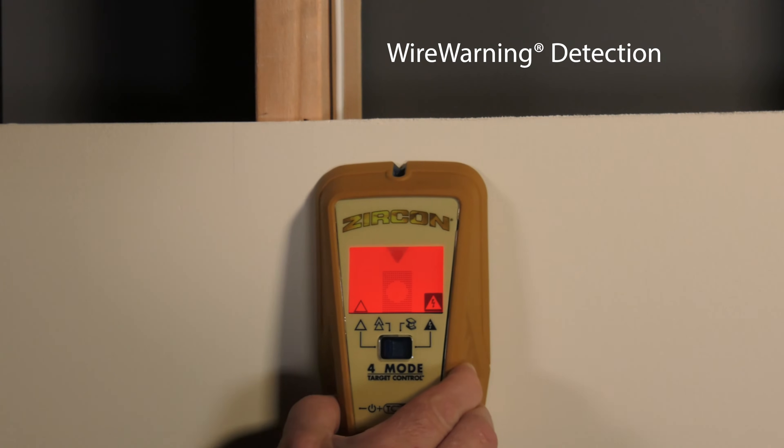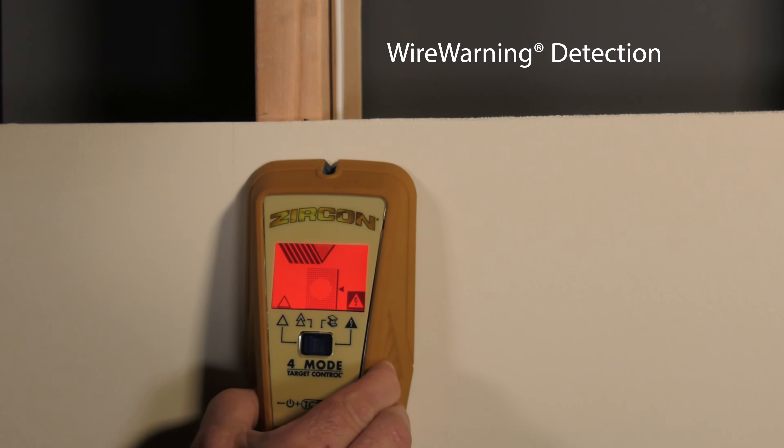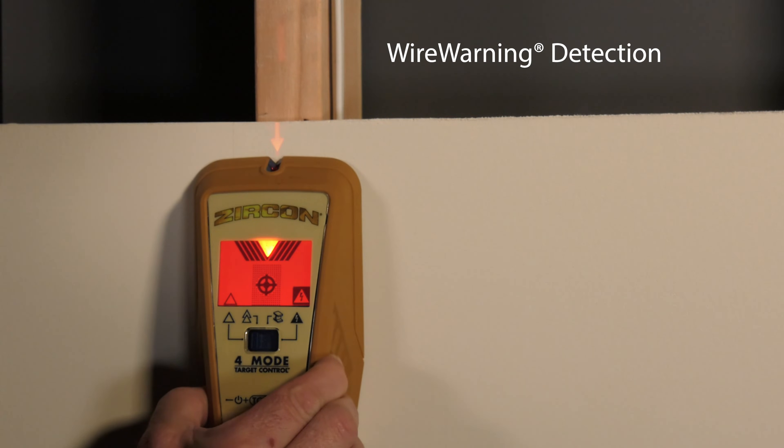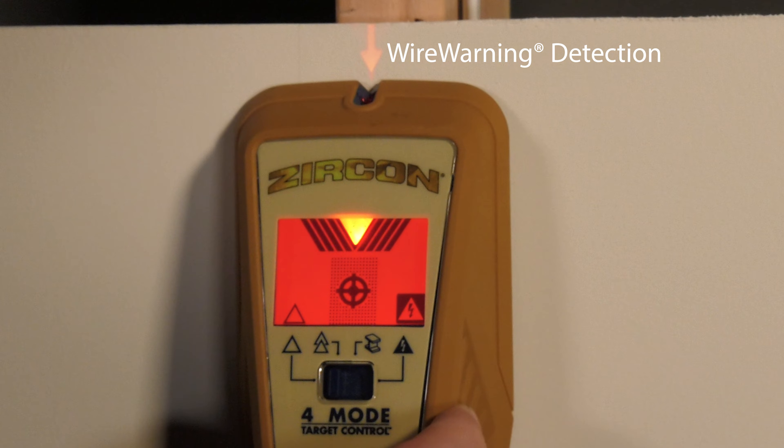Wire Warning Detection continuously alerts the presence of live, unshielded AC electricity in TC, stud scan, deep scan, and metal scan modes.